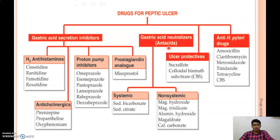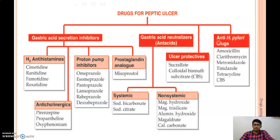In summary, for peptic ulcer and GERD we can use gastric acid secretion inhibitors like H2 antihistamines, anticholinergics, proton pump inhibitors, and prostaglandins. To neutralize already-secreted acid, we use systemic and non-systemic antacids. To protect the ulcer from further HCl contact and fasten healing, we use ulcer protective agents. For H. pylori-induced peptic ulcer, anti-H. pylori drugs like amoxicillin, clarithromycin, metronidazole, tinidazole, tetracycline, and colloidal bismuth subcitrate are used.